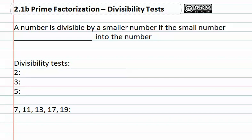2.1b Prime Factorization: Divisibility Tests. A number is divisible by a smaller number if the smaller number evenly divides into the number. There are a few tests that we can use to help us find three numbers commonly found in a larger number: 2, 3, and 5. There are divisibility tests that go with each of these.